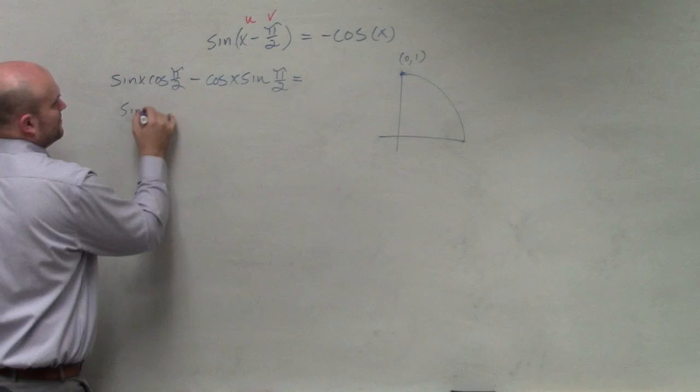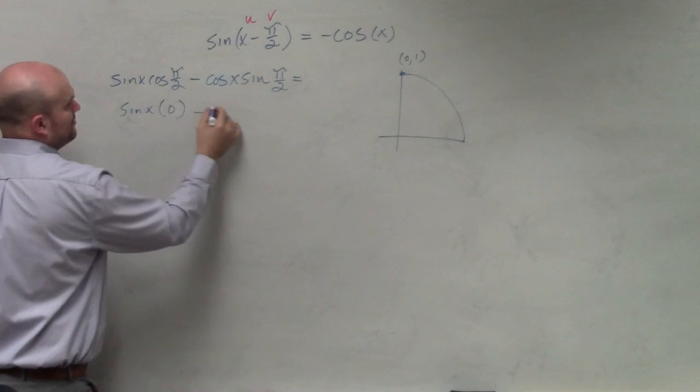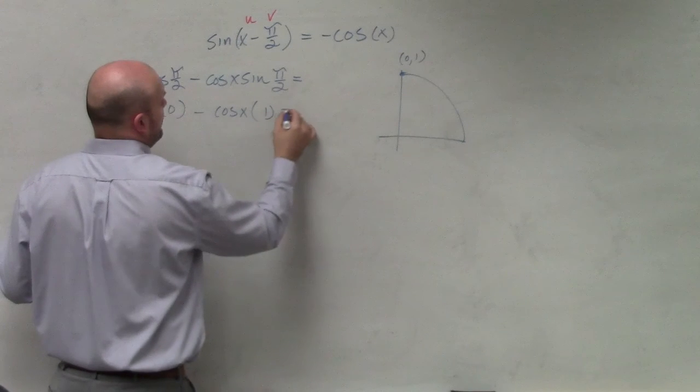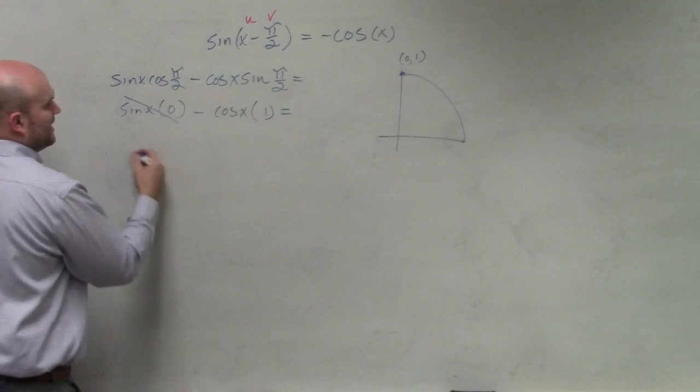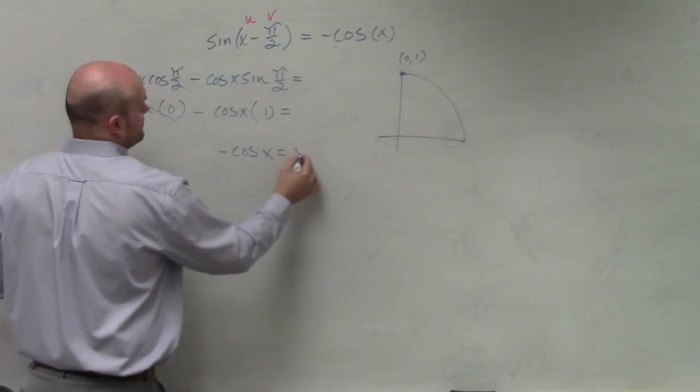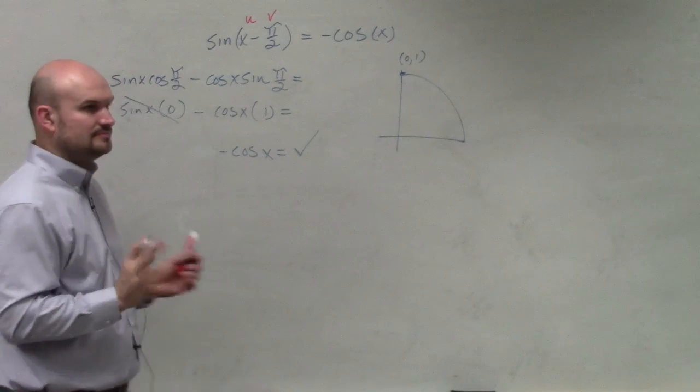So cosine of pi halves is 0 minus cosine of x times sine of pi halves, which is 1. Well, that goes to 0, and I'm left with negative cosine of x, which is the same as my right side. And done.